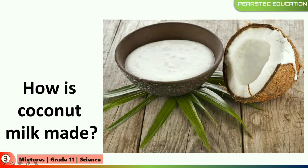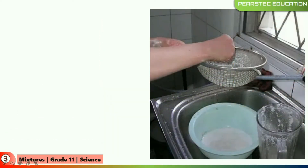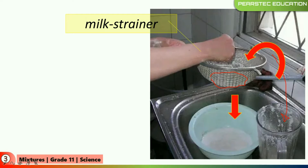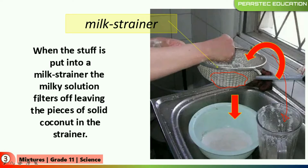How is coconut milk made? Everybody knows that your mother used to make coconut milk to put into dishes. The coconut milk is very creamy and it is made out of scraped coconut. She will scrape the coconut and mix it with water. Then she will squeeze it — the particles of the coconut pieces will remain and the milk will be poured into the tub. When the stuff is put into a milk strainer, the milky solution filters off, leaving the pieces of solid coconut in the strainer.